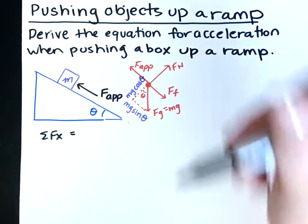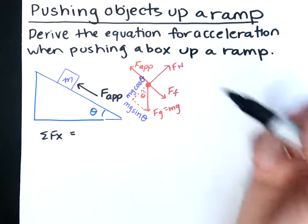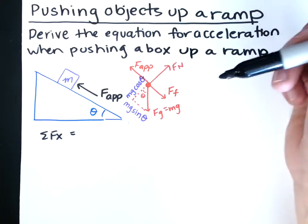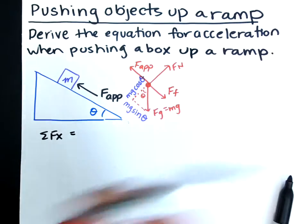So our forces that are acting in the x-direction, well, we have force of friction pulling downwards to the right. We have force applied pulling upwards to the left. And we have mg sine theta pulling downwards to the right.